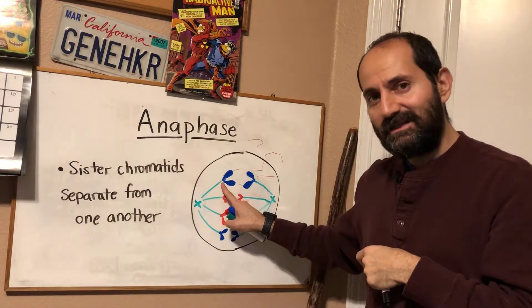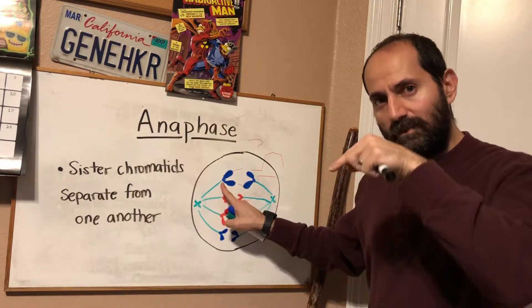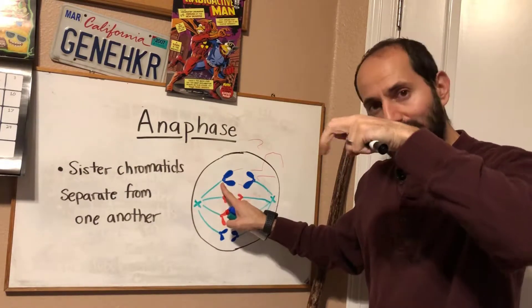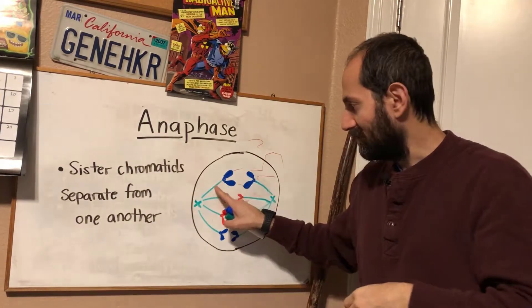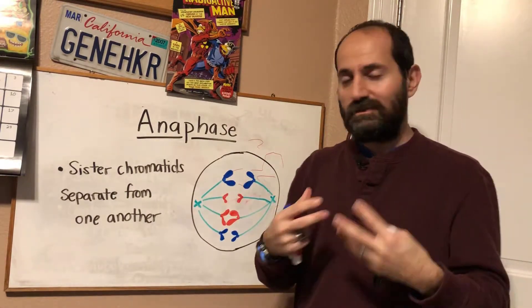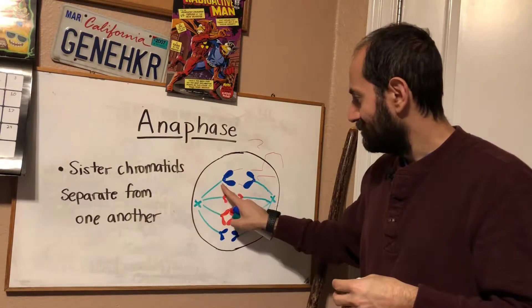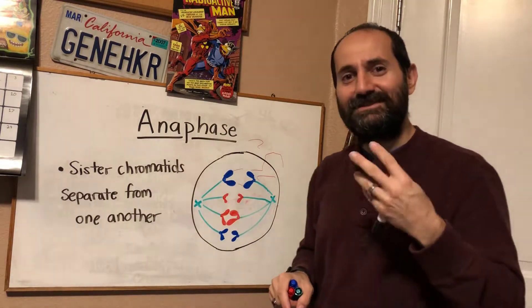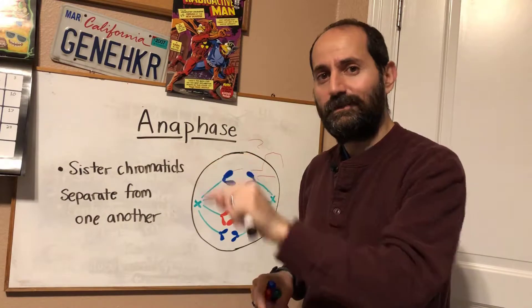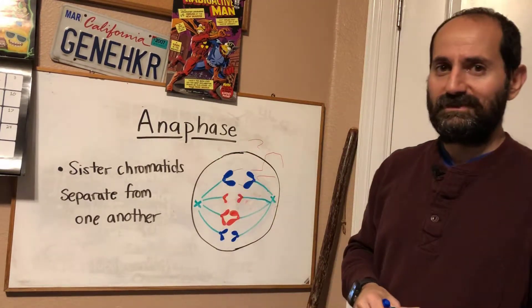So you have inside of the kinetochore a motor protein, and that motor is walking along the microtubules. So the sister chromatids themselves make their way to the opposite poles of the cell.